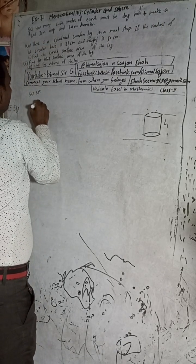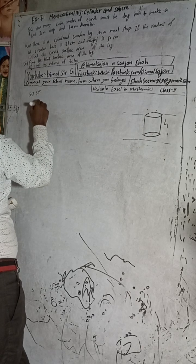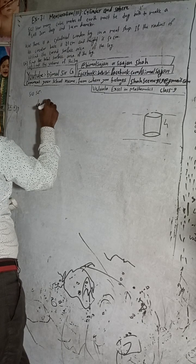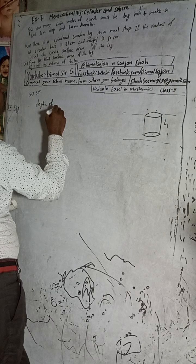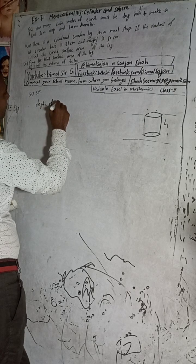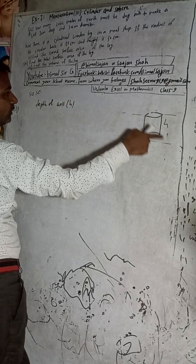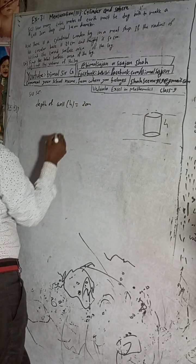Height - depth of the well. Depth of the well means height, just like height. Height how much is here? 20 meters.